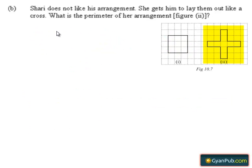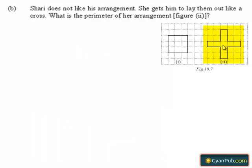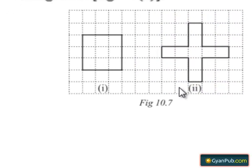Now take the second part. Given that Shari does not like his arrangement, she gets him to lay them out like a cross, and we are given to find the perimeter of her arrangement in figure 2. We know that perimeter is the distance covered along the boundary when you go around the figure once. In order to find the perimeter of this arrangement, we need to know the number of sides of square slabs used in constructing the cross arrangement.